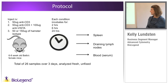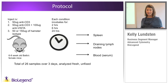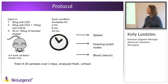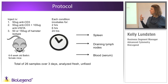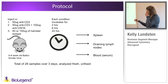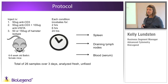From each time point we harvested the spleen, the draining lymph nodes, and blood from a tail vein cut for four different cytokine measurements. In all, it was 26 samples over the course of three days, all done unfixed on live cells. I'll show you the series of markers we were interested in.